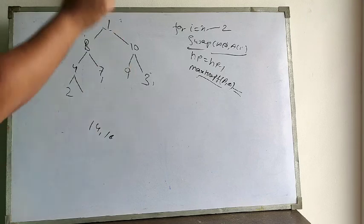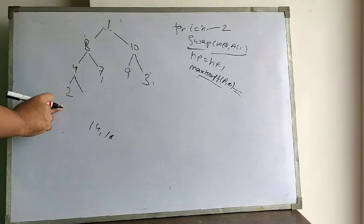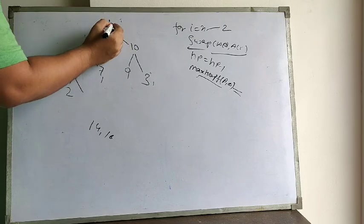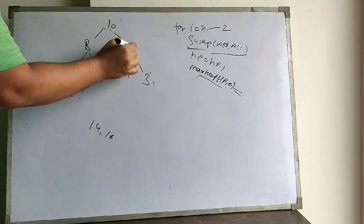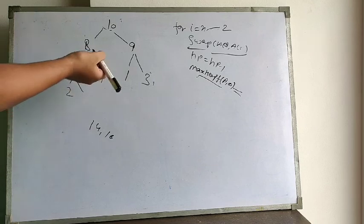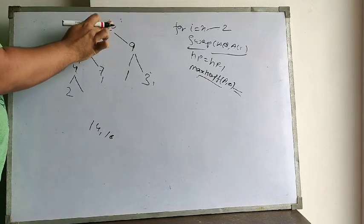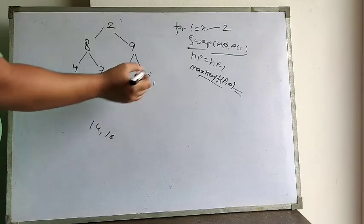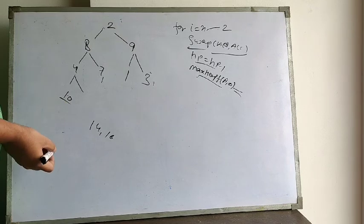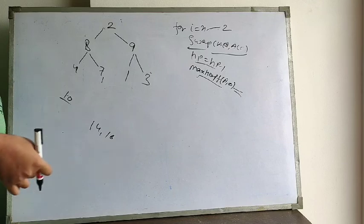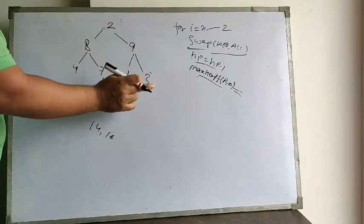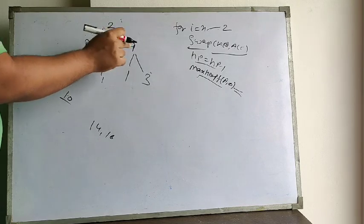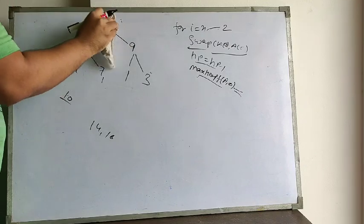Again we create the heap. Heapifying from the top: 10 is the biggest among 10, 8, and 1, so 10 moves up and 1 goes down. 9 is bigger, so 1 is replaced by 9. This is again a heap. We swap 10 and 2 — 10 moves to the last position. We extract 10 and reduce the heap size by 1. Before the next swap, we max-heapify: among 9, 2, and 8, the biggest is 9, so 9 moves to the root.